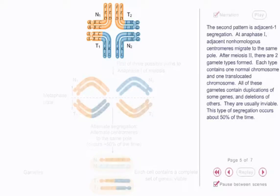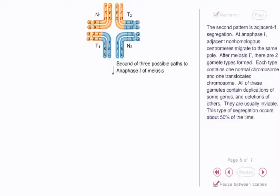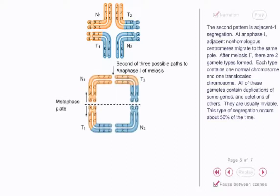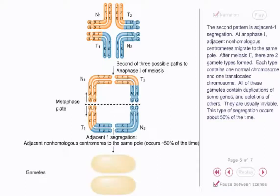The second pattern is adjacent I segregation. At anaphase I, adjacent non-homologous centromeres migrate to the same pole. After meiosis II, there are two gamete types formed.